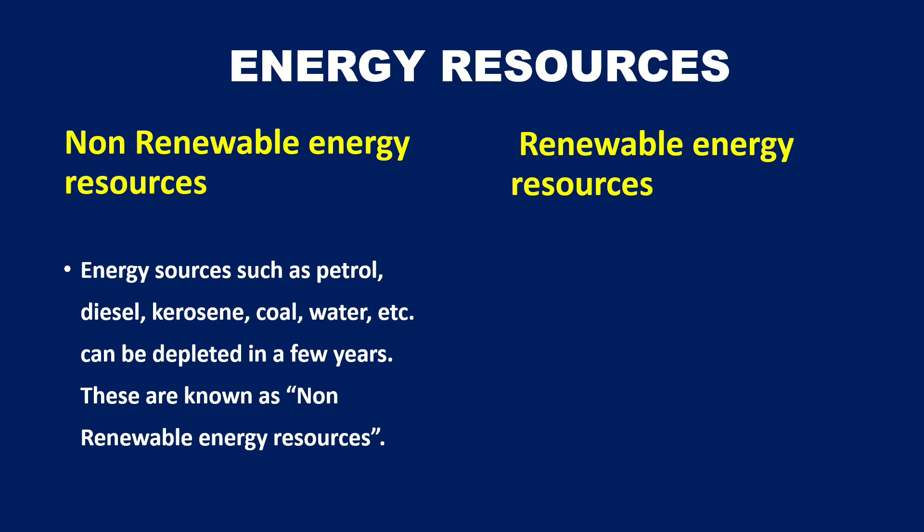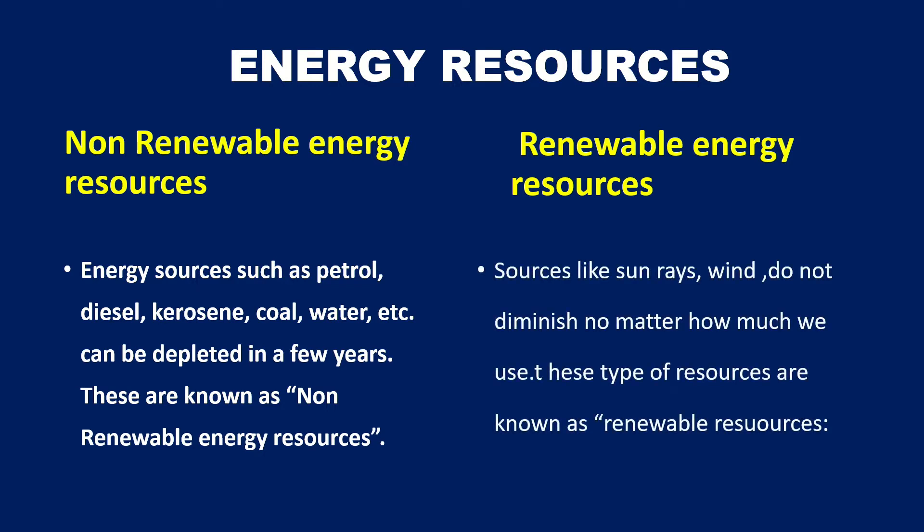The second type is renewable energy resources. Sources like sun rays and wind do not diminish no matter how much we use — these are known as renewable resources. Resources like sun rays, wind, and water cannot be diminished. They will not diminish and they will be rejuvenating back. Daily we will get sun rays; daily we will get the movement of wind. Such resources never deplete — they are called renewable energy resources.